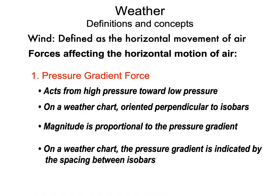Wind is the horizontal movement of air. What makes wind? There are several forces that affect the horizontal motion of air. One is the pressure gradient force. Because of the definition of pressure, if we have relatively high pressure here and lower pressure over there, we're going to get a force exerted in the horizontal from the higher pressure toward the lower pressure. That's one of the fundamental forces affecting horizontal motion of air.